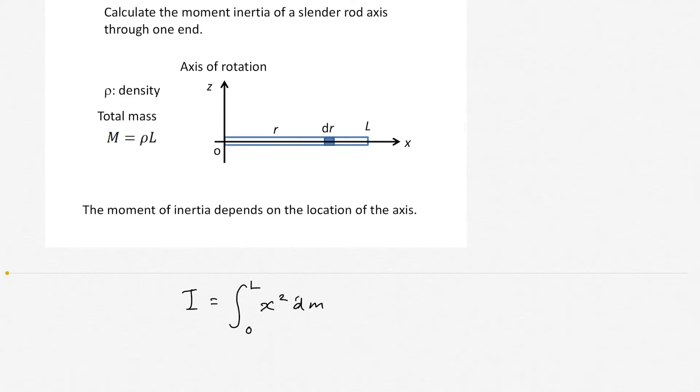And dm is expressed as ρ times dx, because ρ is the mass per unit length. So if you multiply by dx, you will get the mass.